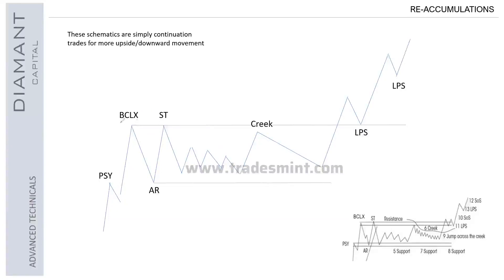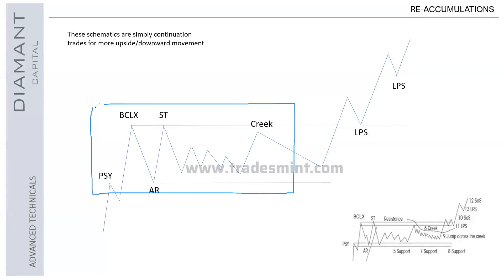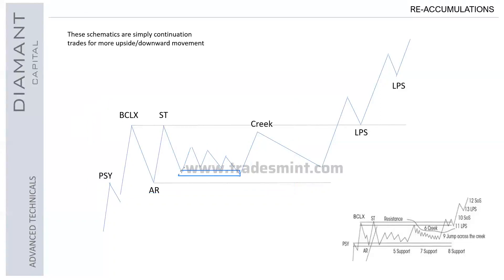We're stuck within this range between the AR, PSY, buying climax, and secondary test. Price tends to just consolidate, perhaps a bit lower, then reaches some kind of point of interest. We start to see some short-term buying to the top, gets to this point of interest, but we know there's liquidity at the top right there. That gives us confirmation that we're going to be taking that.